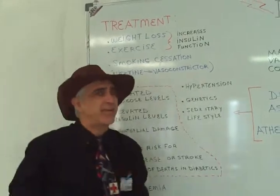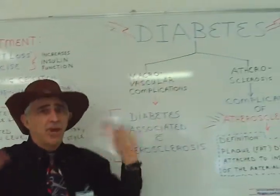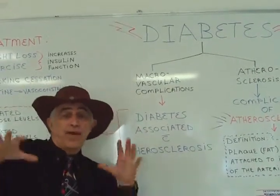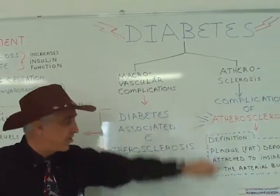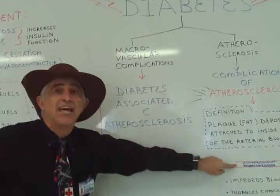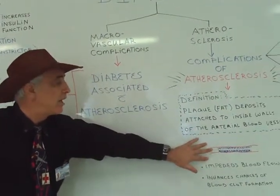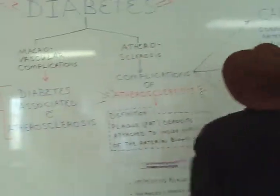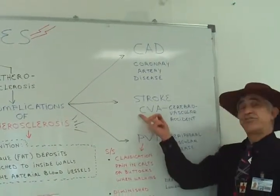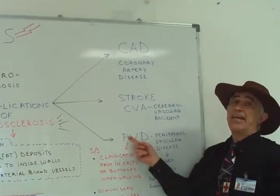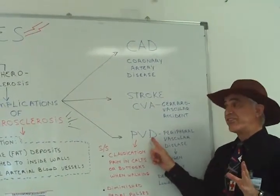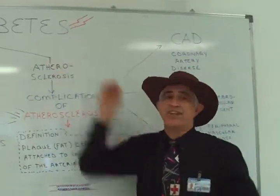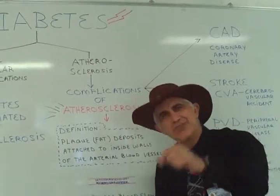To summarize: diabetes long-term complications — what we talked about here is macrovascular disease, with atherosclerosis at its heart, involving arteries that become plaque-laden. The three branches of the atherosclerosis tree are coronary artery disease, stroke or cerebral vascular accident, and peripheral vascular disease. Thank you for listening.